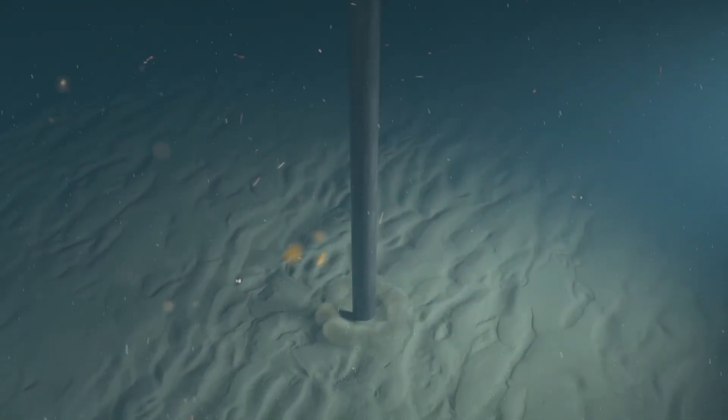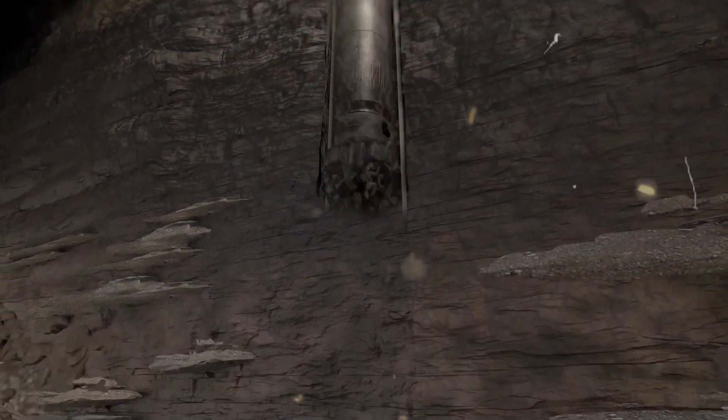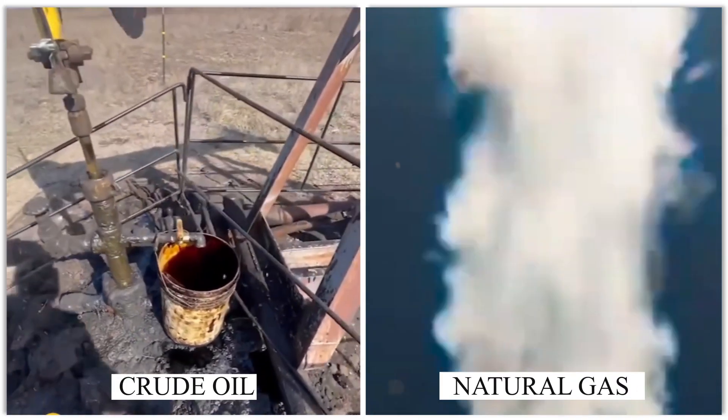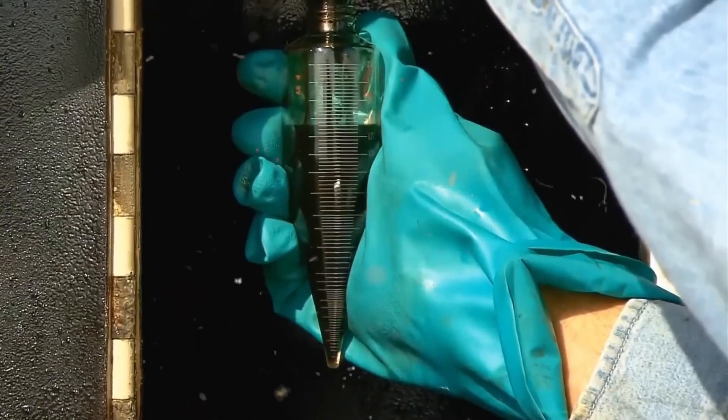This process, called diagenesis, transforms the kerogen into hydrocarbons, which are the primary components of crude oil and natural gas. Geological processes play a crucial role in the formation of crude oil.